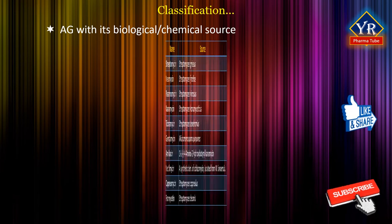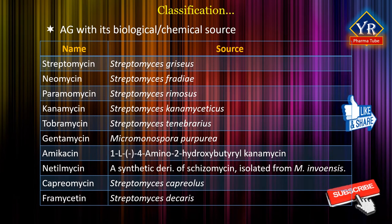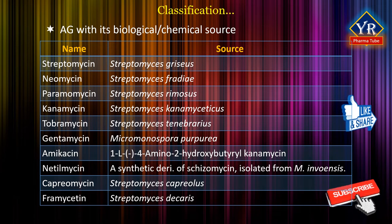Of the eight aminoglycosides that are currently used, five are synthesized from different versions of Streptomyces: streptomycin isolated from Streptomyces griseus, neomycin isolated from Streptomyces fradiae, paramomycin isolated from Streptomyces rimosus, kanamycin isolated from Streptomyces kanamyceticus, and tobramycin isolated from Streptomyces tenebrarius. Gentamicin is isolated from Micromonospora purpurea and consists of a mixture of approximately equal amounts of gentamicin C1, C1A and C2. Amikacin and netilmycin are synthetic drugs. Amikacin is a chemical modification of kanamycin. Netilmycin is a semisynthetic derivative of sisomycin, which is isolated from Micromonospora invoensis.